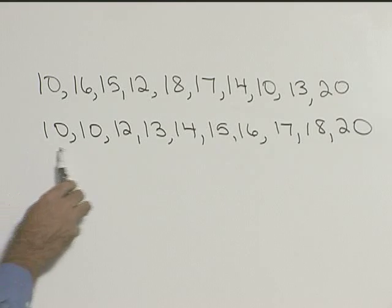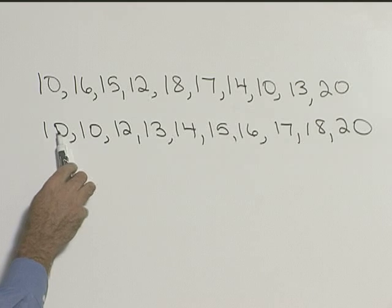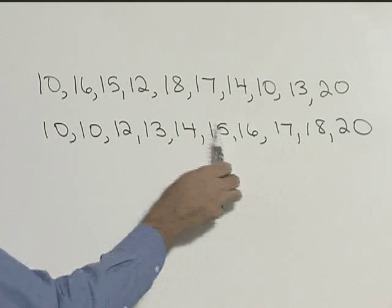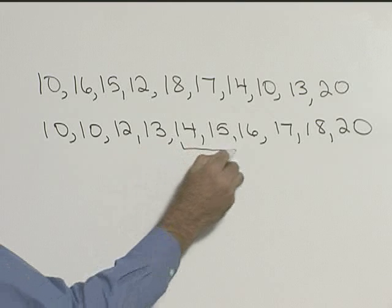So to find the median, what we want to do is find the one in the middle. So if we go four scores this way and four scores from the end, these are the two scores in the middle.